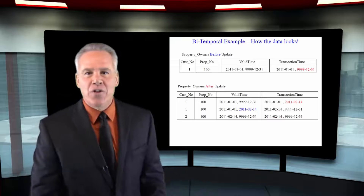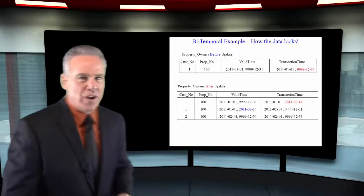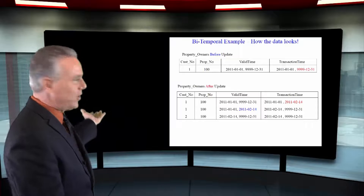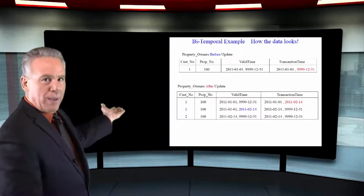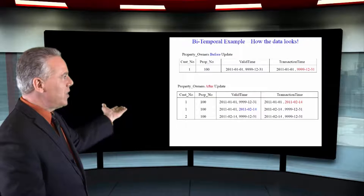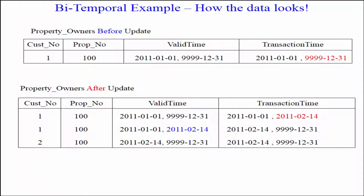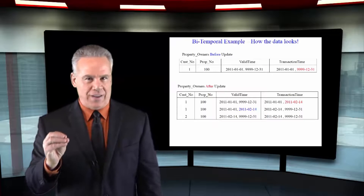Another row is inserted — row number two — that's almost the same. It's customer number one, it's property 100, but notice now the valid time. It says Tom owned this from January 1st to February 14th. And as you can see in the transaction time, it shows that this was actually opened on the 14th, but then the transaction time says 9999-12-31. You would have thought that was closed, but there's no mistake there.